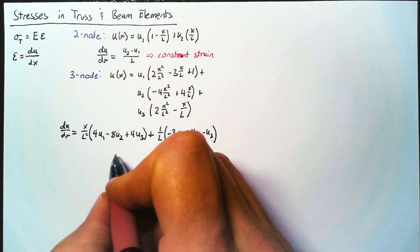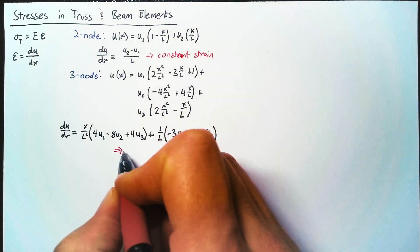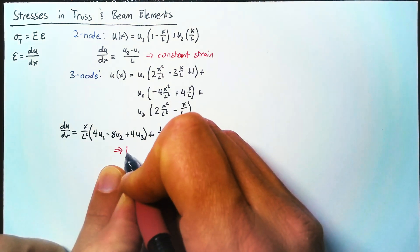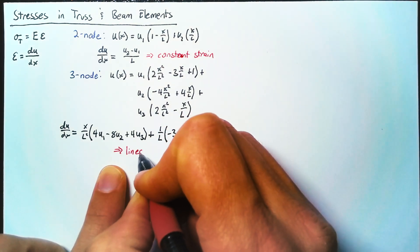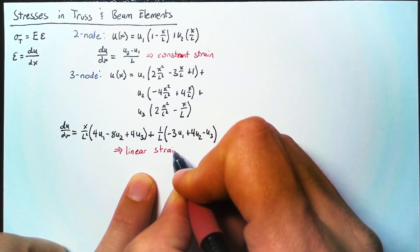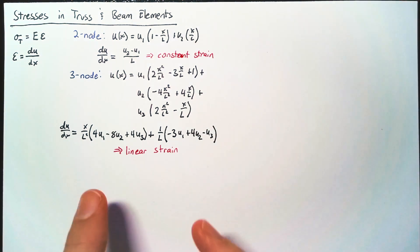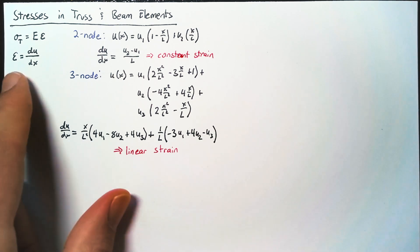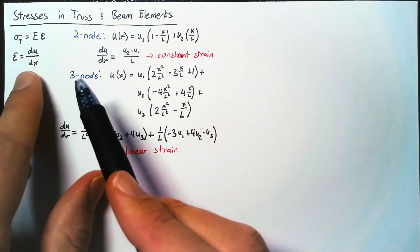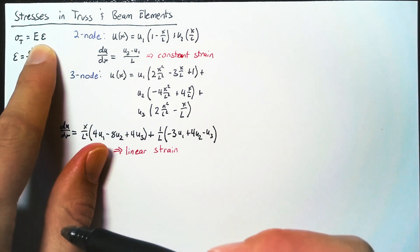One thing to notice is that we do have a contribution from our position. So this is no longer constant strain, it's a linear function. And so we can say that this is a linear strain element. Now typically, we're interested in the maximum stress. In order to find the maximum stress, we just need to find the maximum strain value.